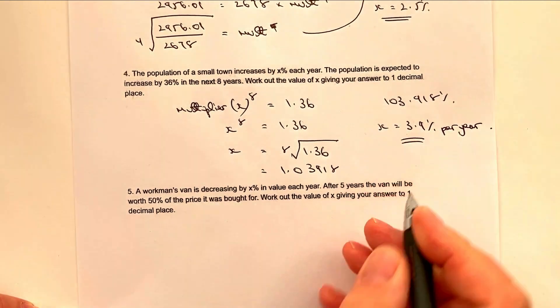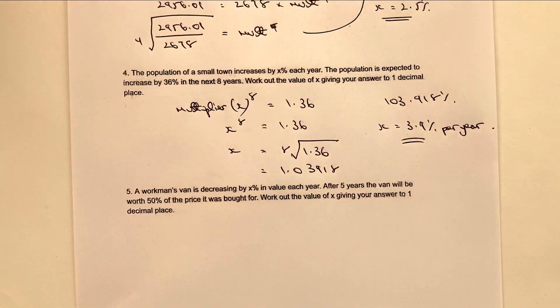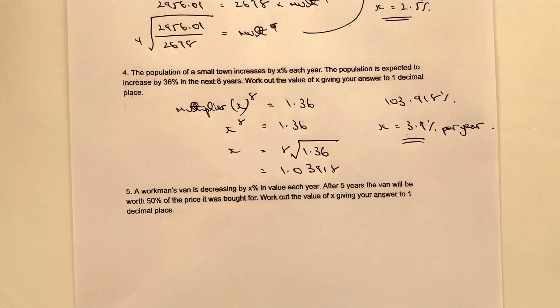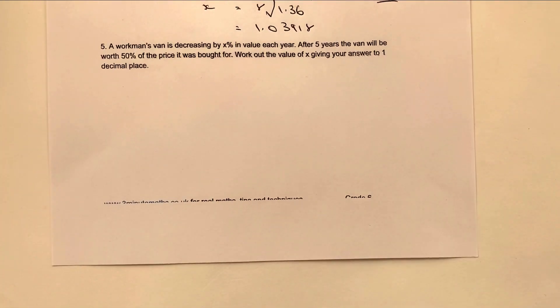Now remember, this is 103 because it's a compounding rate. So therefore, we start at 100 percent, but the actual value of X is going to be 3.9 percent. Let's have a look at question number five.